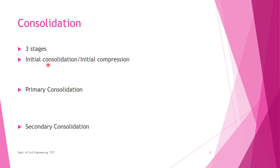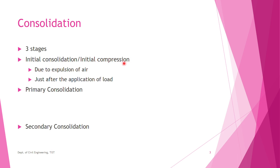Soil consists of three phases: soil solids, water, and air, represented by a three-phase diagram. Initially when the load is applied, the air particles escape from the soil, causing a reduction in volume. This process of reduction in volume due to the expulsion of air from the voids is known as initial consolidation, initial compression, or simply compression. This compression occurs soon after the application of the load.